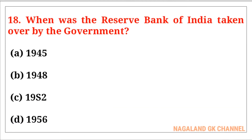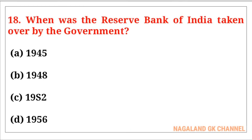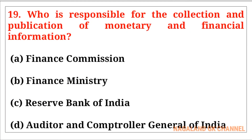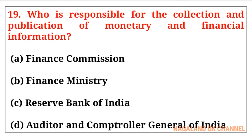Question number eighteen: When was the Reserve Bank of India taken over by the government? The correct answer is option number B, that is in the year 1948. Question number nineteen: Who is responsible for the collection and publication of monetary and fiscal information? The correct answer is option number C, that is the Reserve Bank of India.